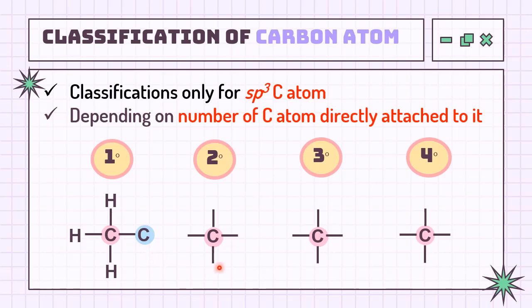At secondary carbon, they should have two carbons attached. Tertiary got 3 and quaternary got 4.